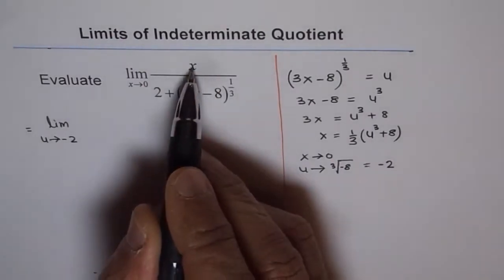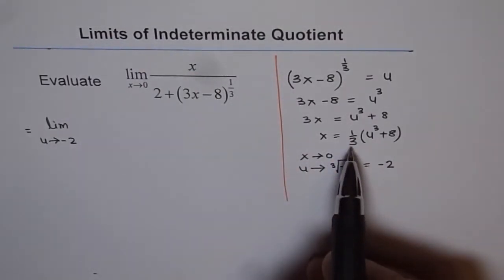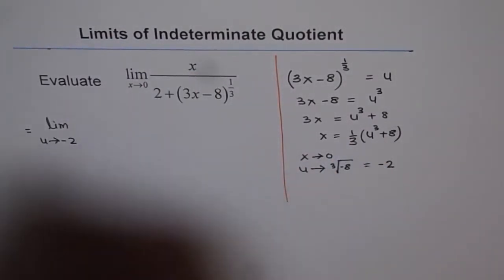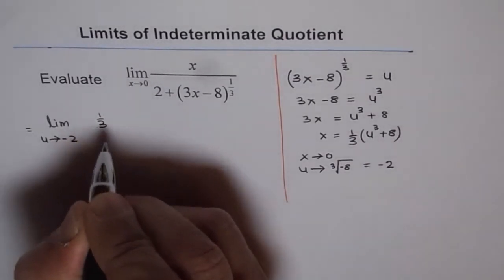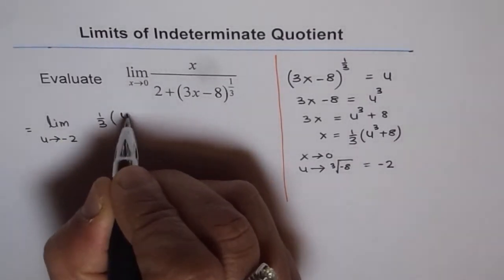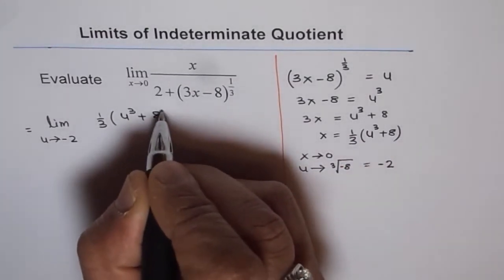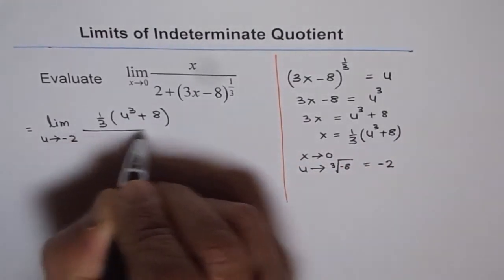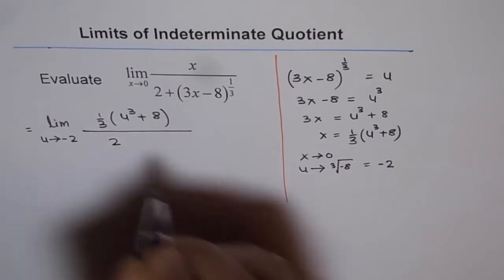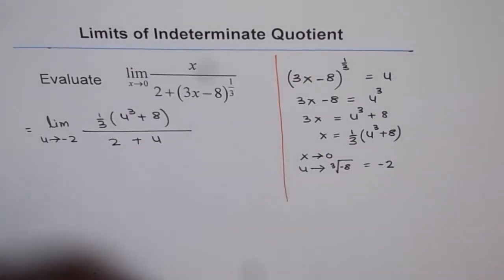And instead of x, we will write one third u cube plus 8. So we will write one third of u cube plus 8 divided by 2 plus u.